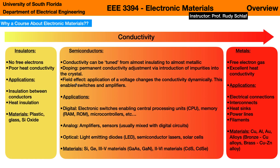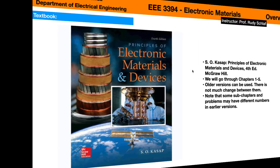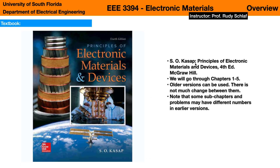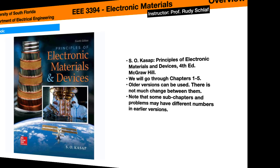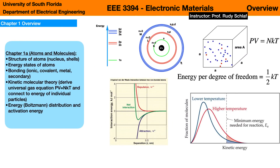By the end of the course, you'll understand how insulators, semiconductors, and metals come about depending on the atoms they are made from. The textbook for the course is S.O. Kasap, Principles of Electronic Materials and Devices. The latest edition is the fourth, and we will go through chapters one through five, finishing with semiconductors in chapter five. Older versions can be used and are much cheaper; there aren't many changes between them, though some sub-chapter and problem numbers may differ slightly from the fourth edition.